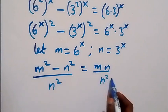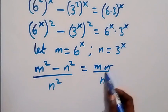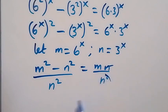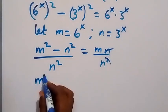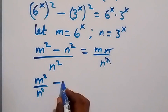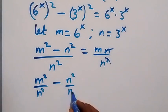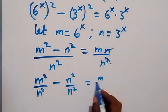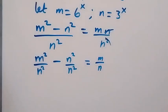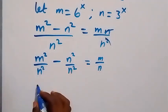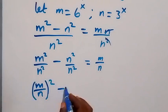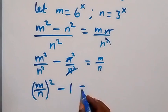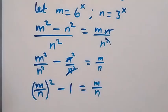From here, let's divide both sides by n squared. One n cancels on the right side, and we can separate the left side as m squared over n squared minus n squared over n squared, which equals n over n. This simplifies to (m/n)² minus 1 = m/n.